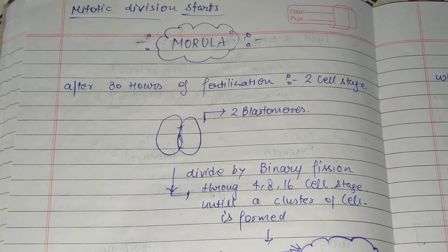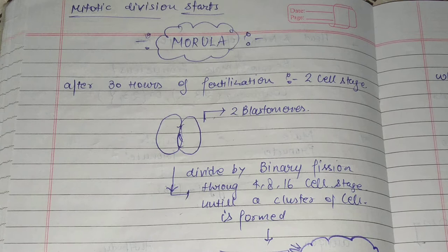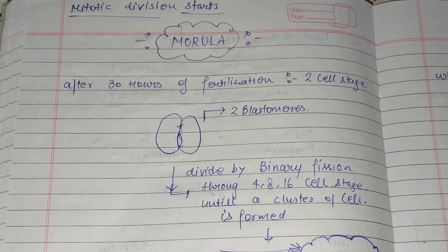As we already discussed in the previous video about fertilization — how fertilization takes place and where fertilization takes place — today we will talk about Morola. The male pronuclei and female pronuclei form the zygote. When mitotic division starts in the zygote, the next stage is Morola. This is when cleavage begins.